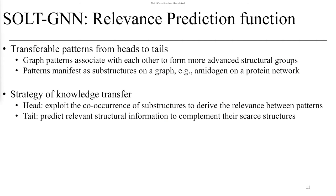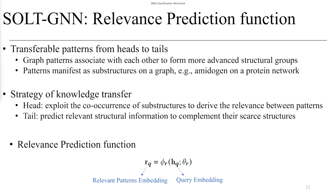The abundant structures on head graphs open an opportunity to exploit transferable patterns from head to tail graphs. Graph patterns usually associate with each other to form more advanced structural groups, and patterns usually manifest as substructures on a graph. We exploit the co-occurrence of substructures to derive the relevance between patterns, and then structural information can be predicted on tail graphs to complement their scarce structures. To achieve this, we use a relevance prediction function phi_r to predict the relevant pattern for query embedding H_q. The relevance prediction function preserves the relevance between patterns from head graphs and enables relevant pattern prediction for structure-scarce tail graphs.